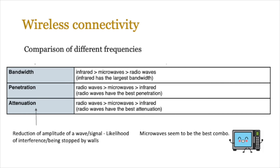For bandwidth, infrared is greater than microwaves, which is greater than radio waves — so infrared has the largest bandwidth. For penetration, radio waves are greater than microwaves, which are greater than infrared — so radio waves have the best penetration and can pierce walls. For signal loss, radio waves also have the best attenuation. Since microwaves sit in the middle across all three factors, that's why we use microwaves for both Bluetooth and Wi-Fi.